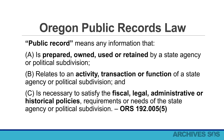Oregon Public Records Law. A public record means any information that: A. is prepared, owned, used, or retained by a state agency or political subdivision; B. relates to an activity, transaction, or function of a state agency or political subdivision; and C. is necessary to satisfy the fiscal, legal, administrative, or historical policies, requirements, or needs of the state agency or political subdivision. ORS 192.005, subsection 5.